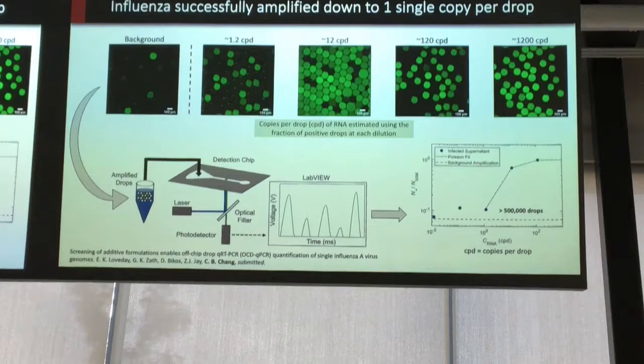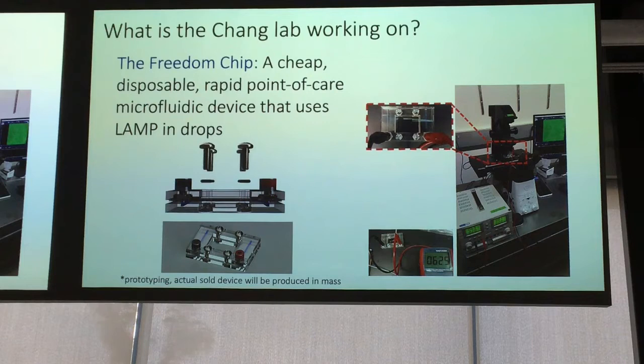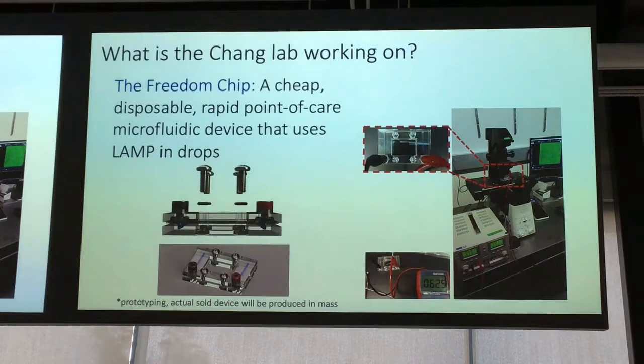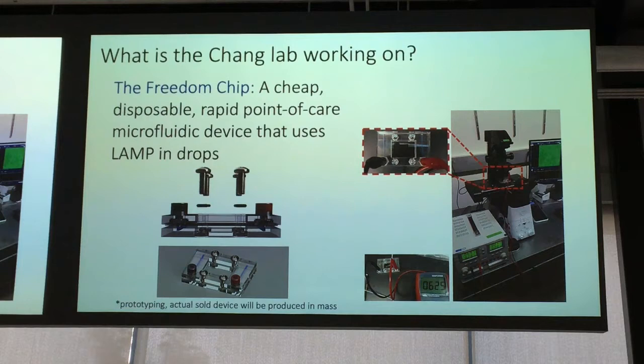When the pandemic happened, I thought we could do digital droplet PCR very easily. So let's just try LAMP in drops. This is what we've been working on for the past few months — digital droplet LAMP, putting LAMP amplification in drops. We call it the Freedom Chip. Here is a prototype. I called it the Freedom Chip because I was cooped up during the beginning of the pandemic and I wanted freedom. It's a cheap, disposable, rapid point-of-care device with drops.